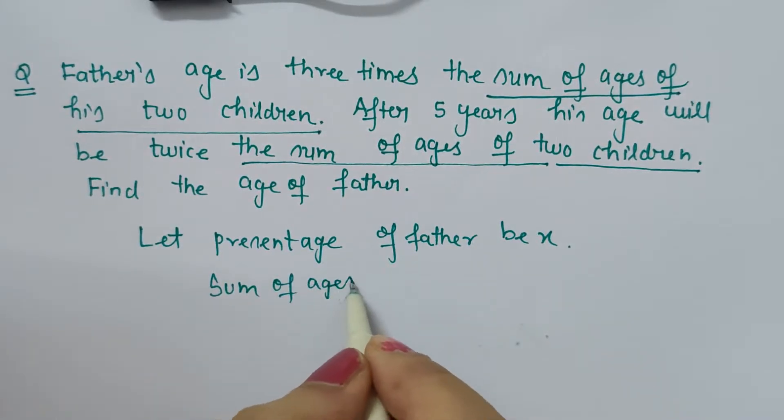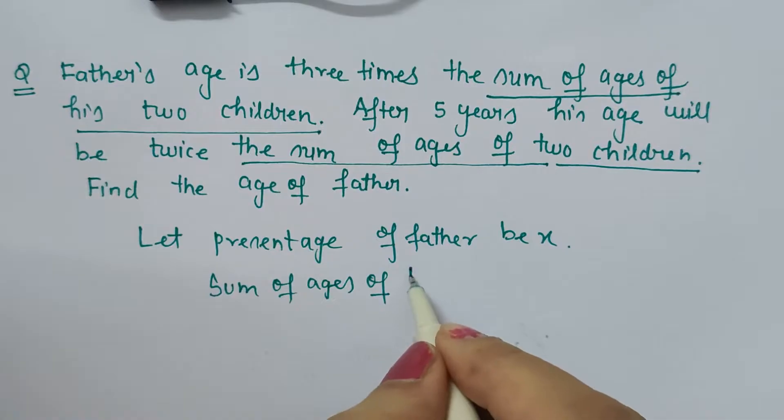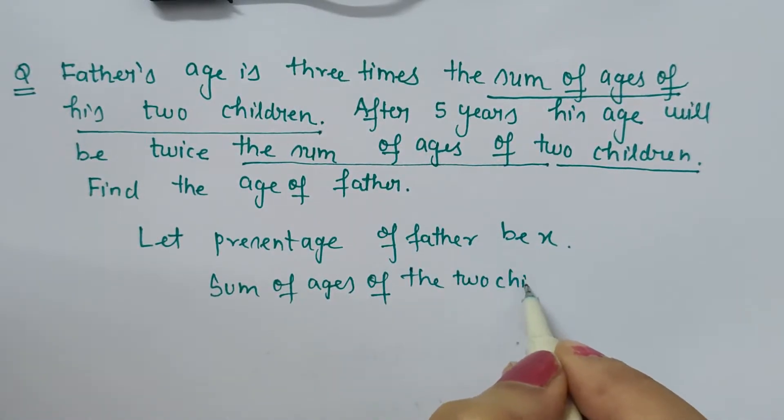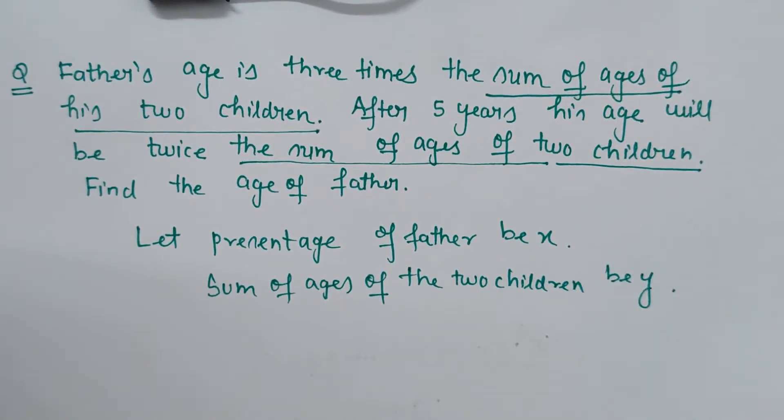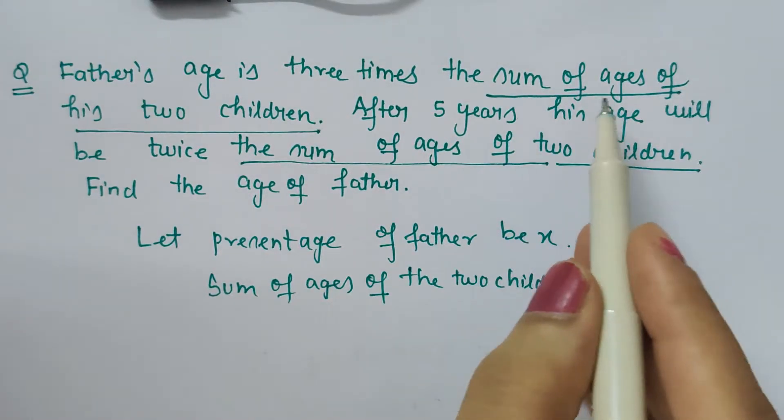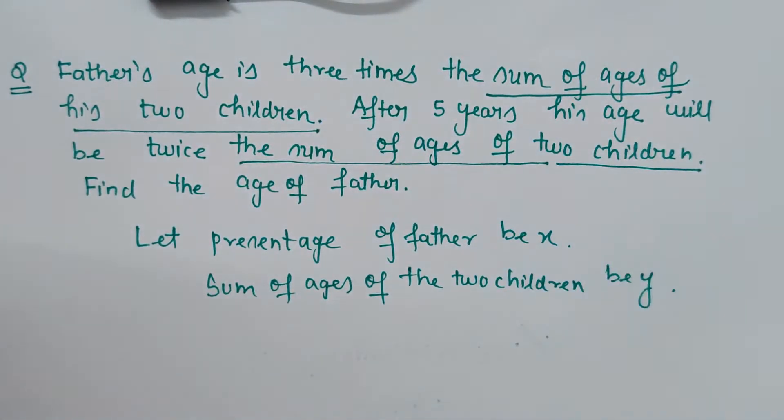So what will we assume? We will also assume that sum of ages of the two children be y. We have assumed another variable for the next unknown, because together the value is not known to us.